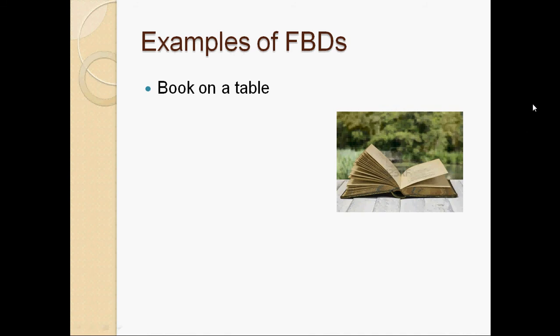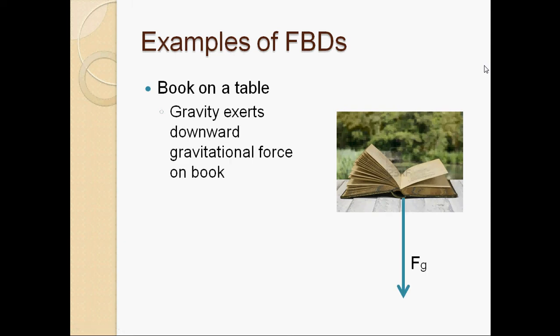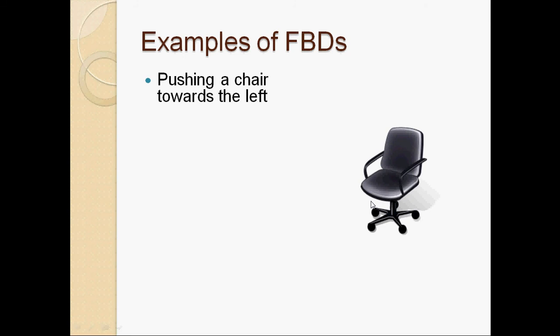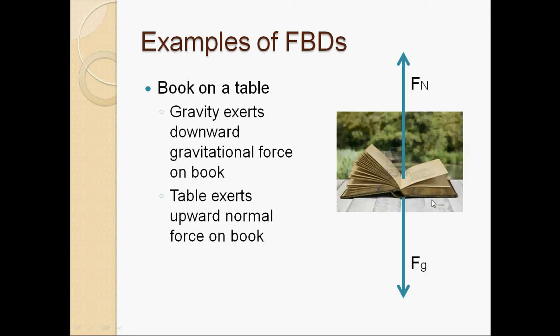Next example: a book sitting on a table. Again, two forces — gravity pulling downward, and the normal force exerted by the table holding it up, preventing it from falling to the ground. The table is perfectly horizontal, so the normal force points perfectly perpendicular to that surface — perfectly vertical, straight upward.